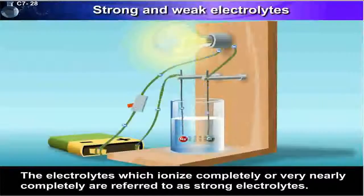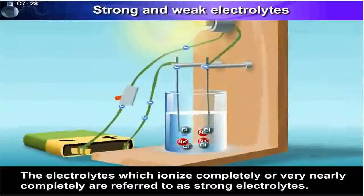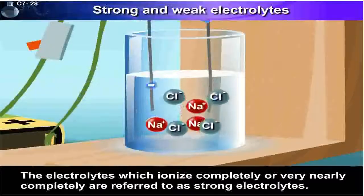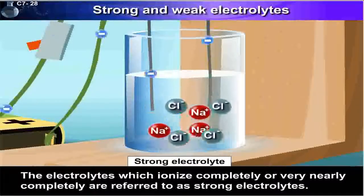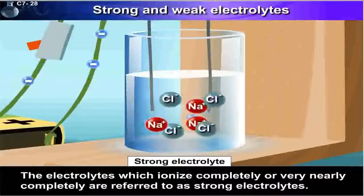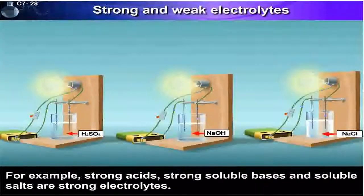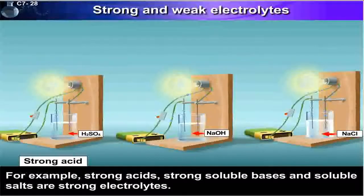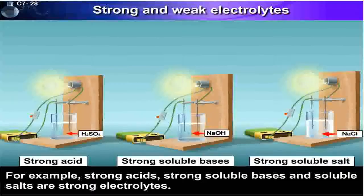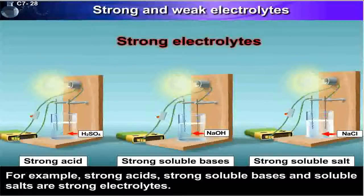The electrolytes which ionize completely, or very nearly completely, are referred to as strong electrolytes. For example, strong acids, strong soluble bases, and soluble salts are strong electrolytes.